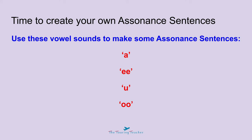For the vowel sound A, you can use the word 'cat' and other words that have the same vowel sound. For the vowel sound double E, you can use the word 'feet' and other words that have the same vowel sound. For the vowel sound U, you could use the word 'fun' and another word that has the same vowel sound. And for the double O vowel sound, you could use a word like 'book' and some other words that have the same vowel sounds.